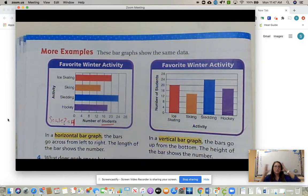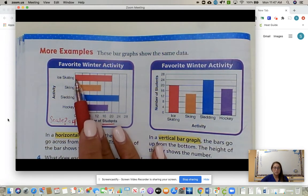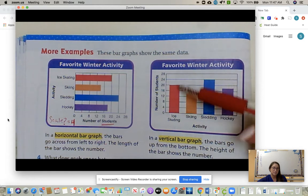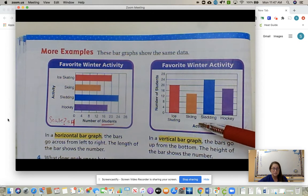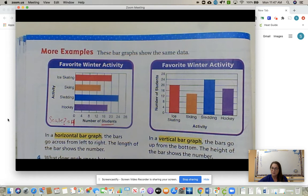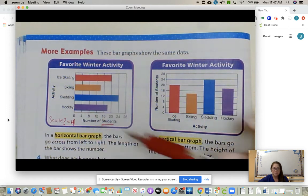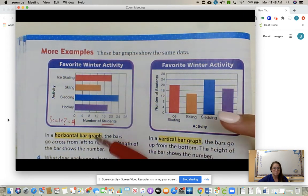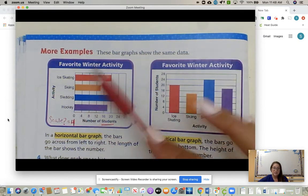All right. We talked about the two types of bar graphs. We have a horizontal bar graph, which means our bars go from side to side, or a vertical bar graph, which means our bars go up and down. It has the same data. It doesn't mean one looks different, but it does not have different information. It's the same type of graph. It's still a bar graph. They use the same title, activities, numbers, everything to prove that to you. Both have the same title: favorite winter activity. That is the same.